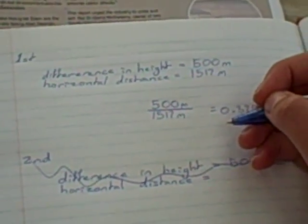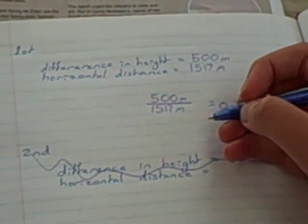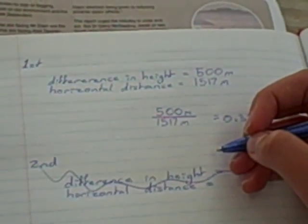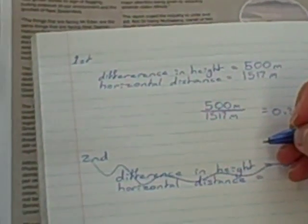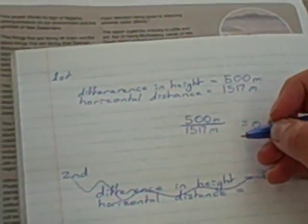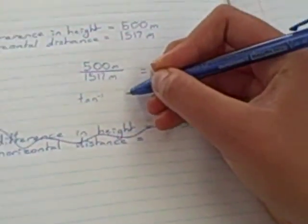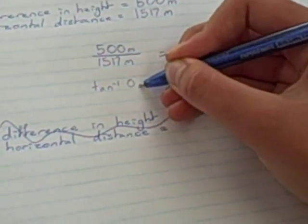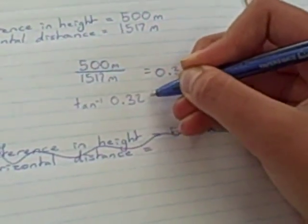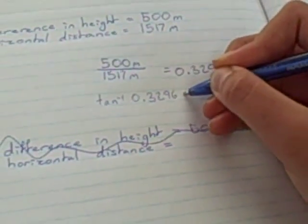So we go 0.32, so to find the degree, we need to do inverse tan, 0.3296. So it's an 18.2 degree difference in height.